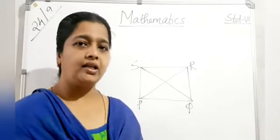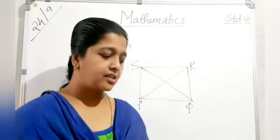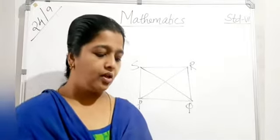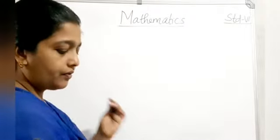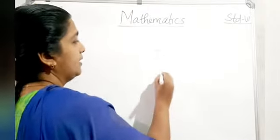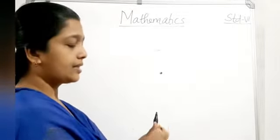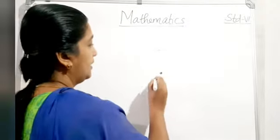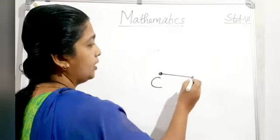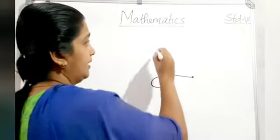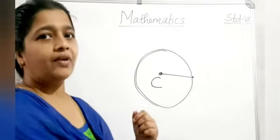A triangle is a three-sided polygon and a quadrilateral is a four-sided polygon. A circle is the path of a point moving at the same distance from a fixed point, which is the center. The distance from the center to one point on the circle is known as the radius. The distance around the circle is known as the circumference.